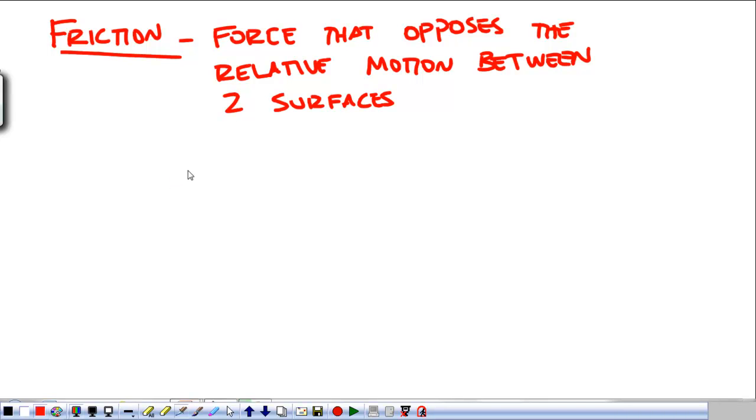So friction is the thing that keeps things from sliding, the thing that happens with sliding. It's what keeps things from sliding continuously. The reason we have friction, we have on a very microscopic level between two surfaces a roughness between surfaces.